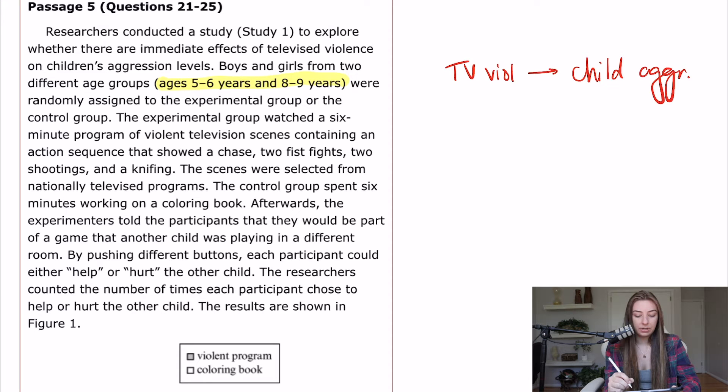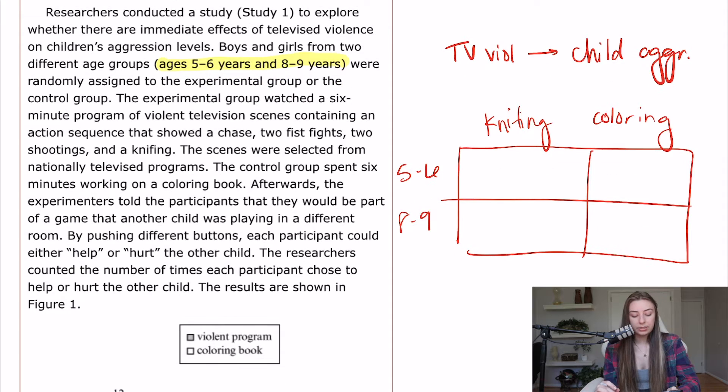The experimental group watched a six-minute video of violent television scenes containing an action sequence that showed a chase, two fistfights, two shootings, and a knifing. The scenes were selected from nationally televised programs. The control group spent six minutes working on a coloring book. So we got our groups. We got the group who's watching a knifing and then the ones who are coloring. We also have five to six and eight to nine year olds. So the groups kind of look like this. Afterwards, the experimenters told the participants that they would be part of a game that another child was playing in a different room. By pushing different buttons, each participant could either help or hurt the other child. The researchers counted the number of times each participant chose to help or hurt the child. The results are shown in figure one.